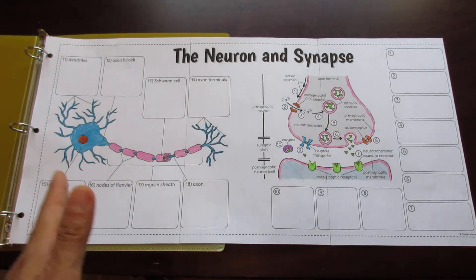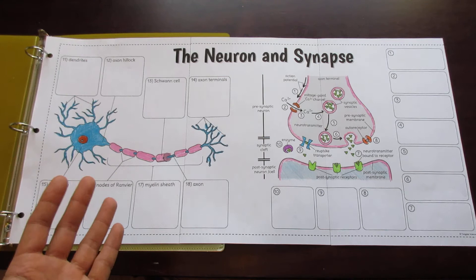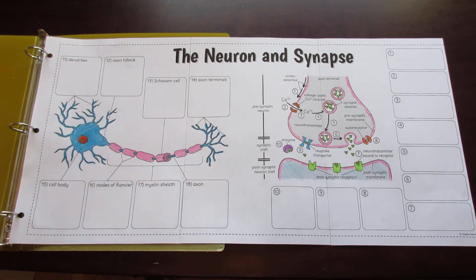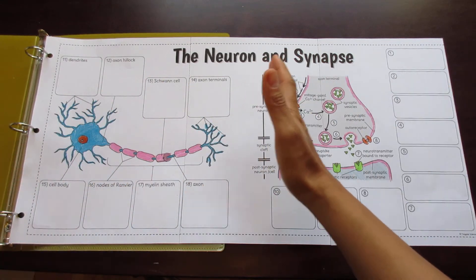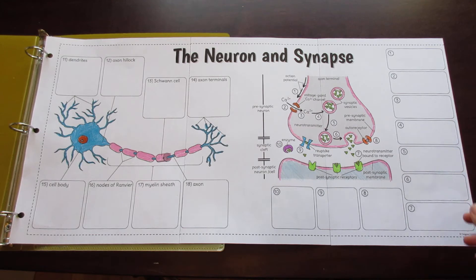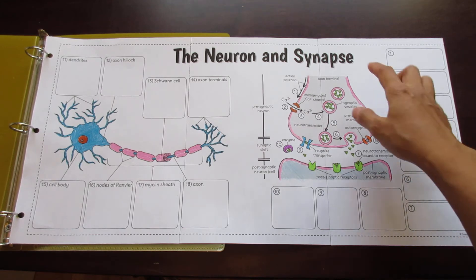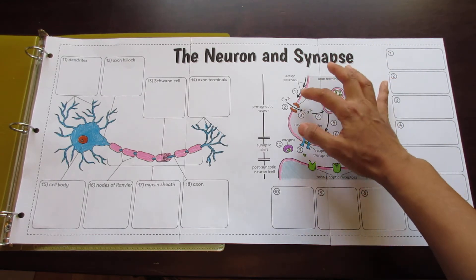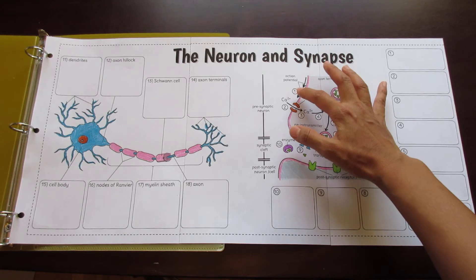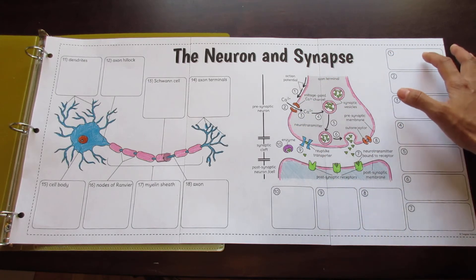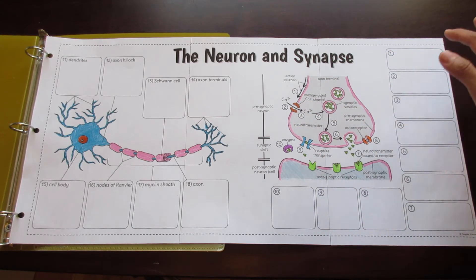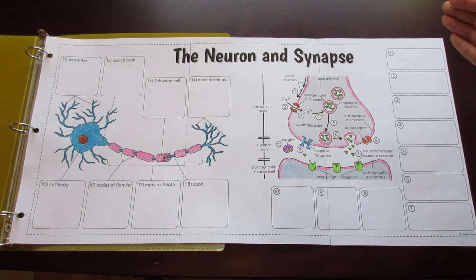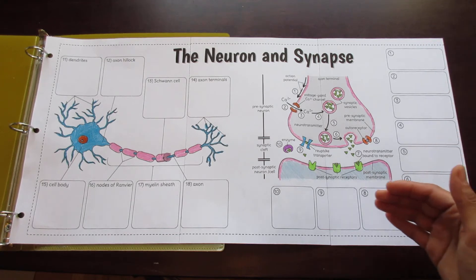This foldable is divided into two parts. The left side contains a diagram of the neuron, and the right side contains a diagram of the synapse. For the synapse, each event in synaptic transmission has a number associated with it that corresponds to a box where students can write the description of each event. This helps lead them through it in a very guided way.